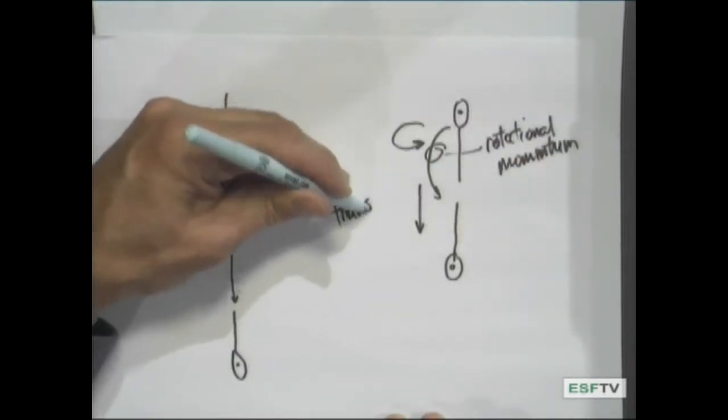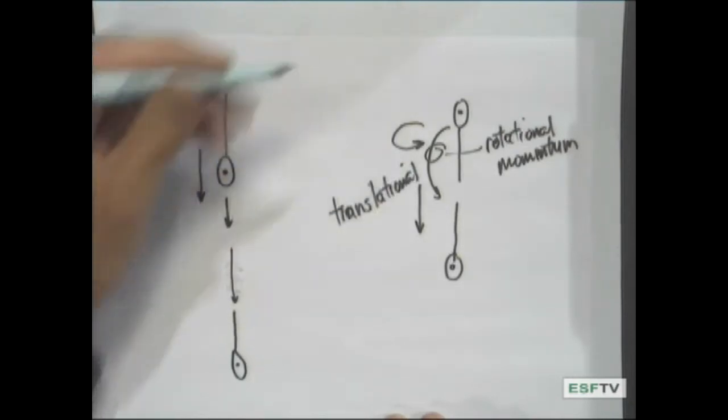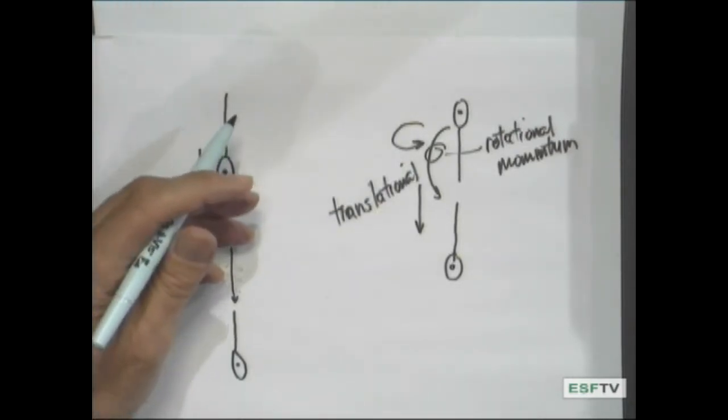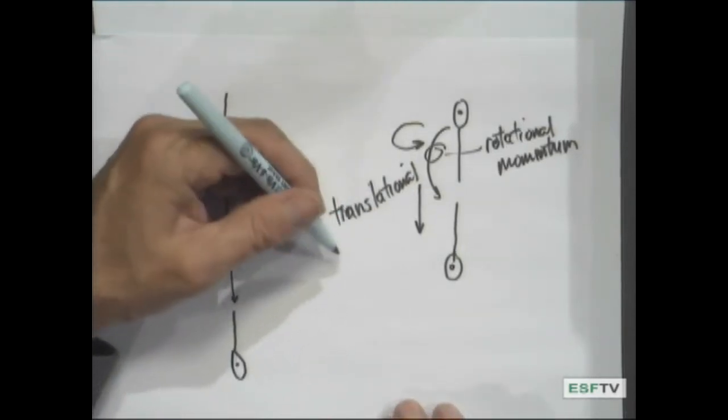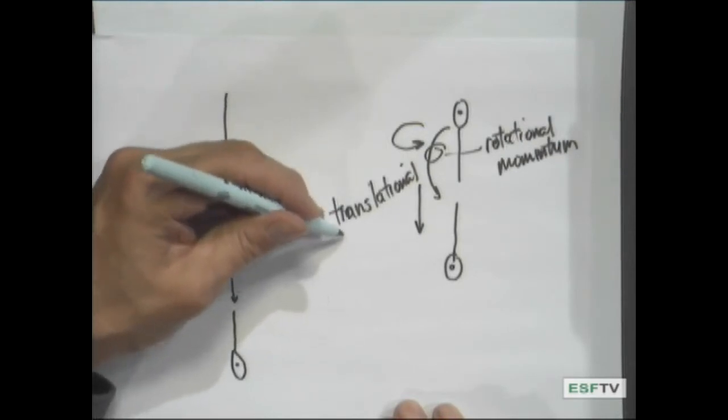And when you do that initially, that rotational momentum will start the seed spinning and it will come down as the helicopter for more of the distance from the tree down to the ground.